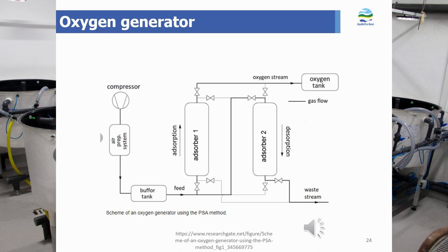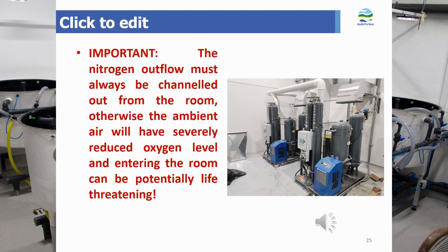It is recommended to keep oxygen purity at least above 92%, otherwise quality will be highly compromised. It is very important that nitrogen exhaust must always be channeled out of the room, otherwise the ambient oxygen level will be severely reduced and entering the room can be potentially life-threatening.